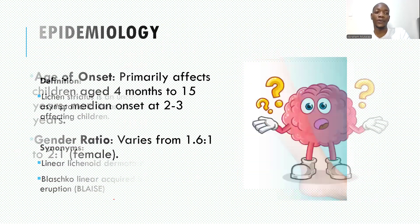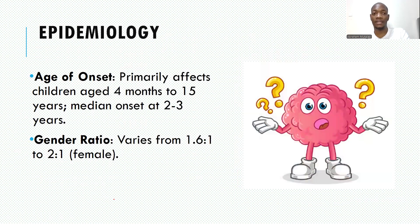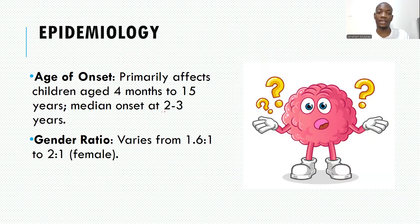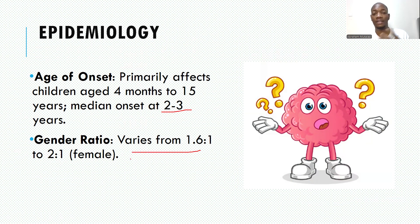The epidemiology is as follows: lichen striatus primarily affects children aged between four months to 15 years of age, with a median onset of about two to three years. It is uncommon, but when you see it, you should have an idea of what it is. In terms of gender, it is more commonly seen in male children compared to female, with a ratio of about two to one.